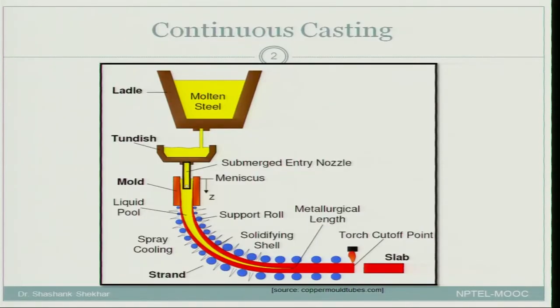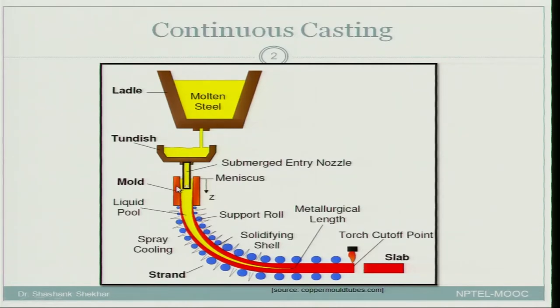One of them is continuous casting. As the name suggests, casting is taking place continuously. Most of the time when we say casting, you think of a batch process where you cast one block, another block and so on, but not in continuous casting. As you can see in the picture, molten steel is being poured into a tundish and then into a mould, but this mould is not closed from the bottom, and the liquid metal goes all the way into a continuous strand.